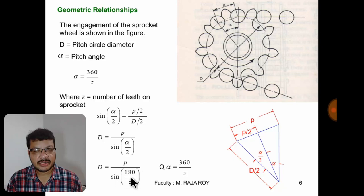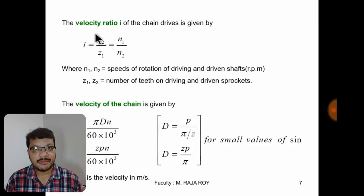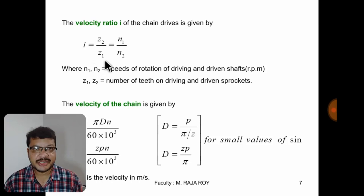Now observe the velocity ratio. Velocity ratio is the ratio of the number of teeth on the driven sprocket divided by the number of teeth on the driving sprocket. The number of teeth on the driven sprocket will be higher compared to the driving sprocket, so that we can reduce the velocity and increase the torque. That is the purpose of the speed reduction ratio or velocity ratio.